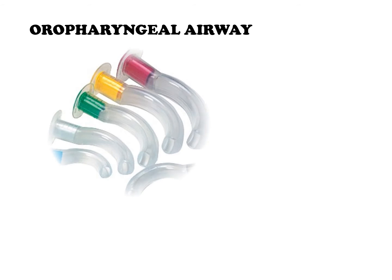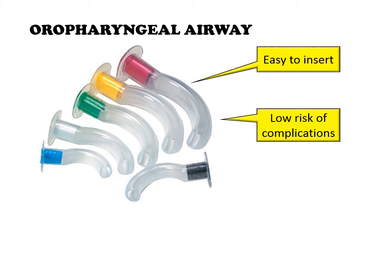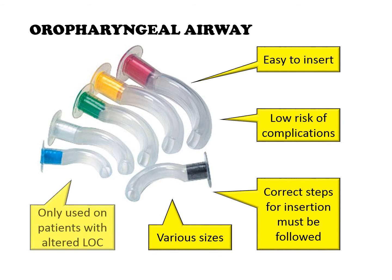Oropharyngeal airways are used to maintain patency in the upper airway when the patient is at risk for obstruction by the tongue or oral secretions. This firm curved shaped tube is easy to insert and has a low risk of complications, although the correct steps to insertion must be followed to avoid tissue trauma. The tube has various sizes and must only be used for patients with an altered level of consciousness as it stimulates the gag reflex.